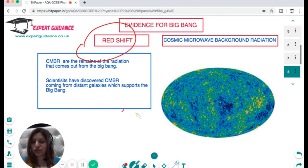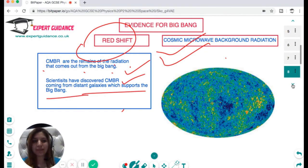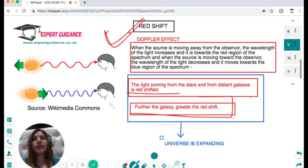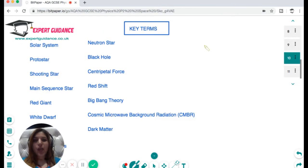One is redshift - we are seeing that the light coming from distant stars and galaxies is redshifted. And we see cosmic microwave background radiation, which are the remains of the radiation that comes out from the Big Bang. Scientists have discovered CMB coming from distant galaxies which supports the Big Bang. The second evidence is redshift - the light coming from stars and distant galaxies is redshifted, which means the galaxy is moving away from you and the universe is expanding.